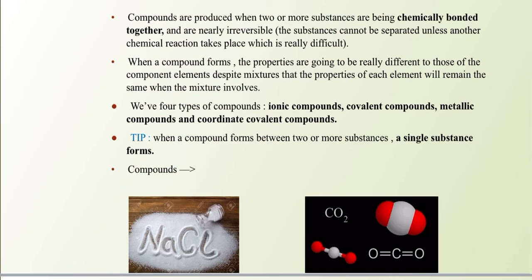There is a tip here: when a compound forms between two or more substances, a single new substance forms. But in a mixture, two or more substances are physically bonded together, so no new substance is formed. In compounds, when those two or more substances are chemically bonded together, a single substance forms.